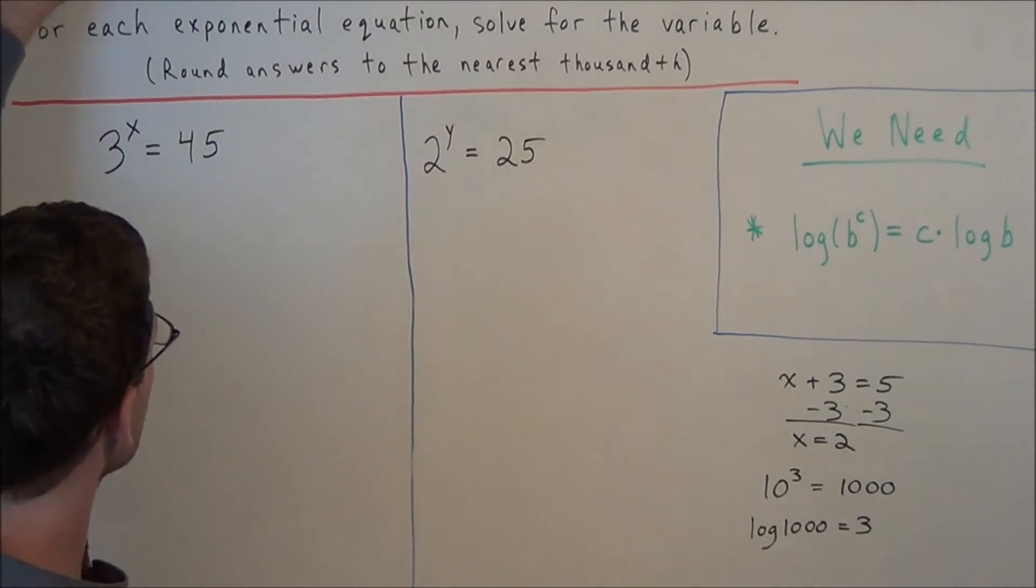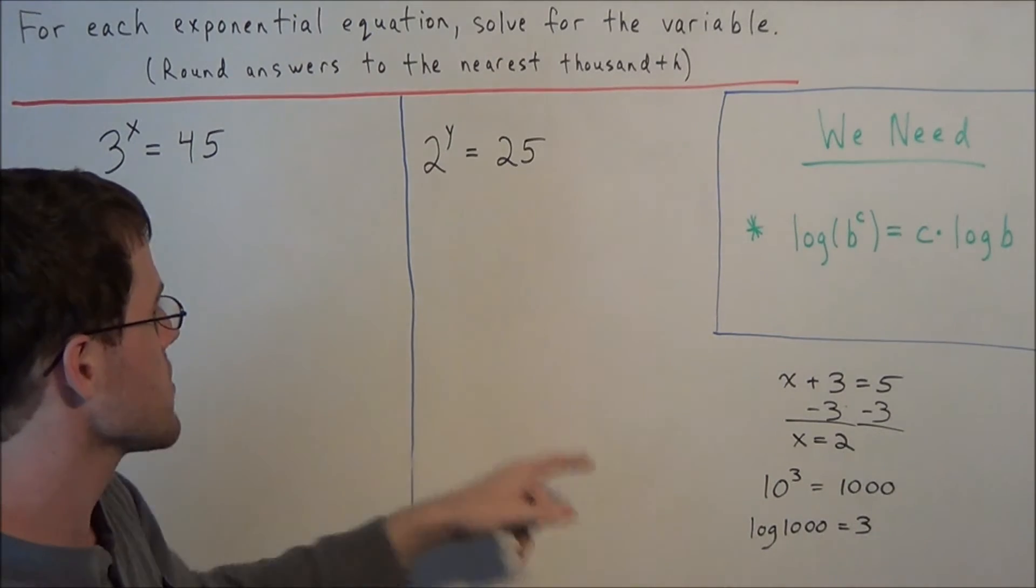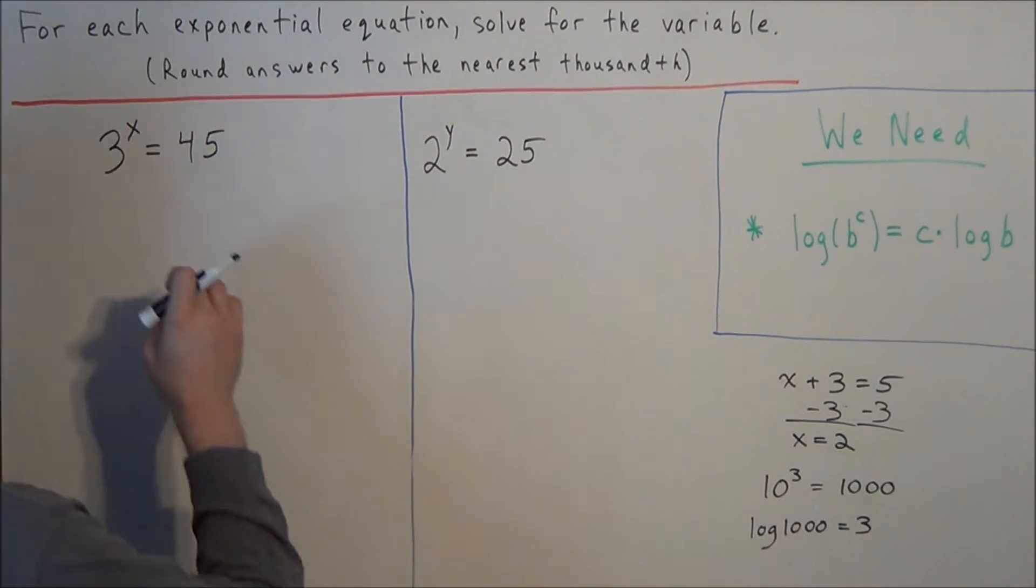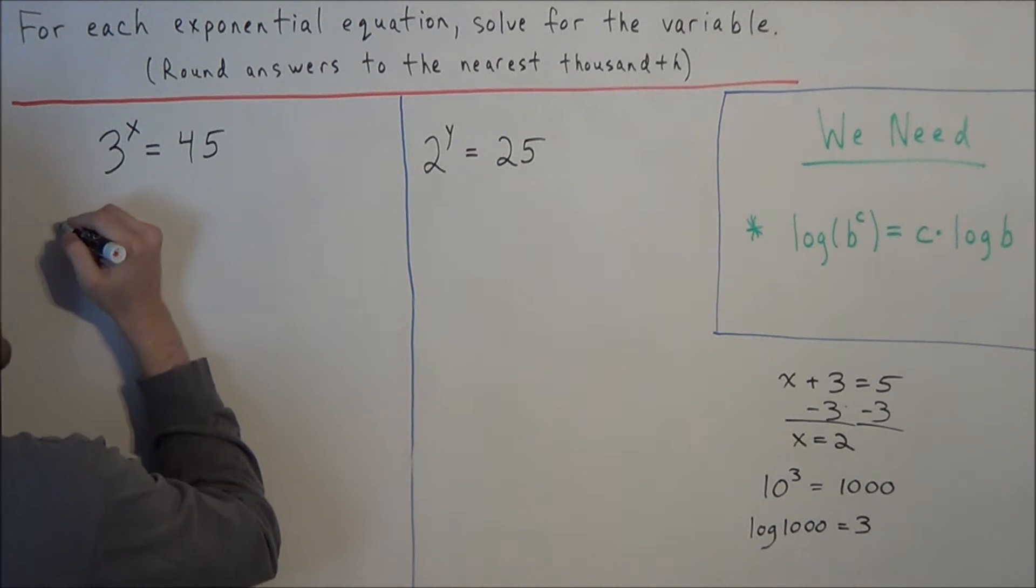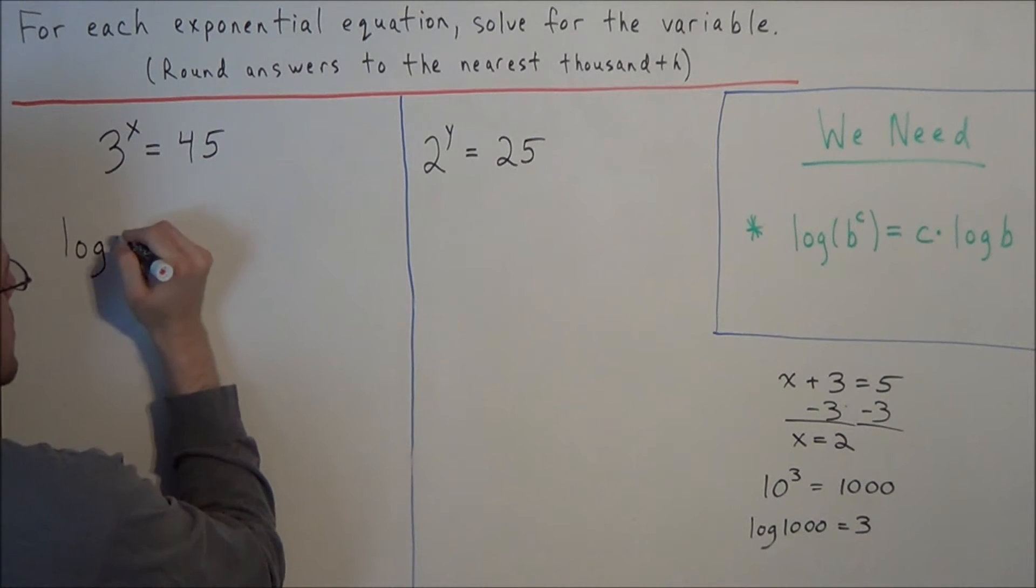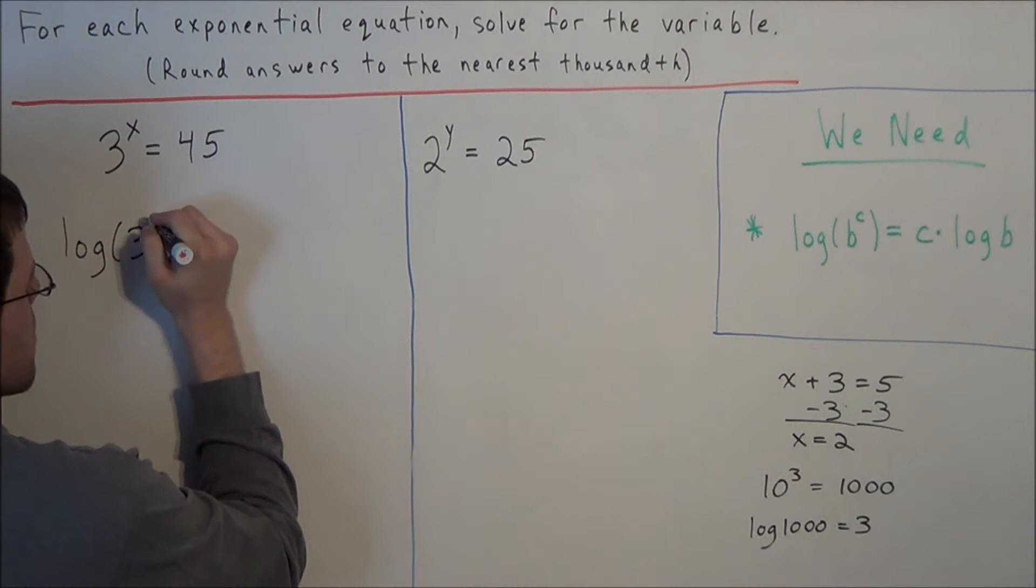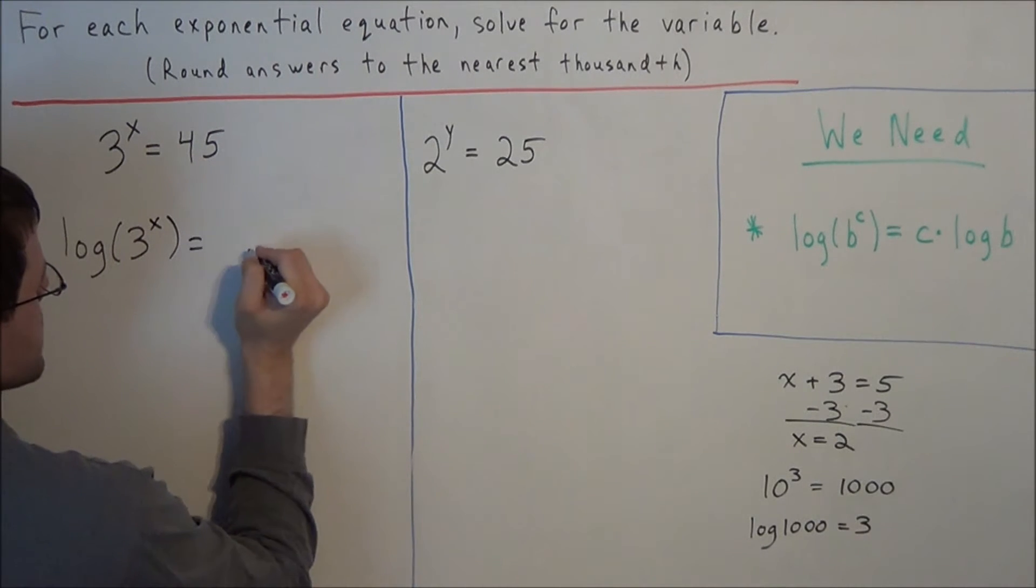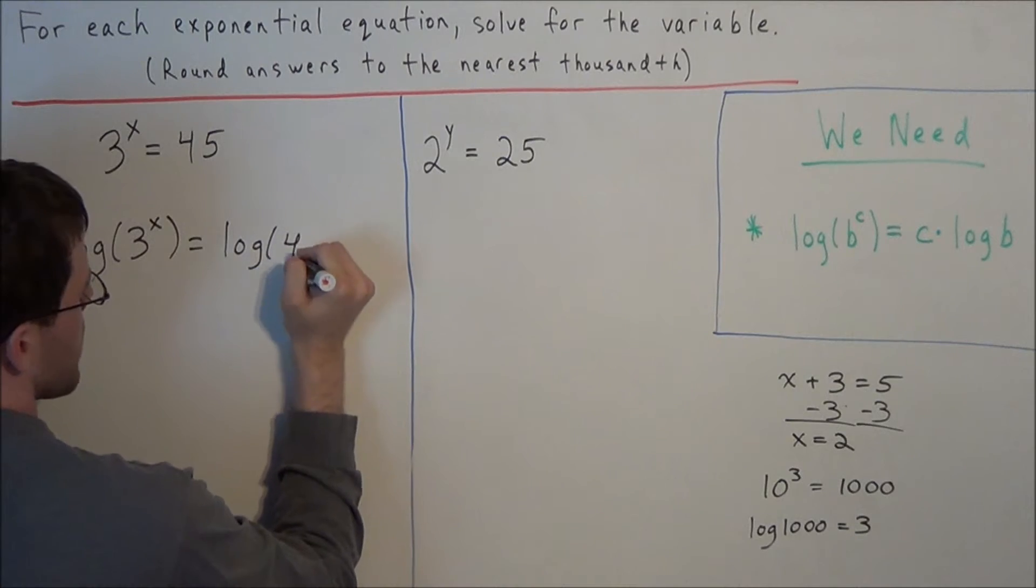So now we use this concept of using the inverses to solve these two problems. So now the inverse operation of raising something to the x power, we're going to use logarithms to undo this exponent. So now we take the log of both sides and we have log of 3 to the x equals log of 45.